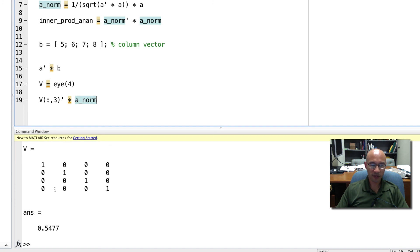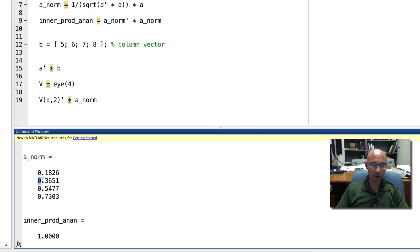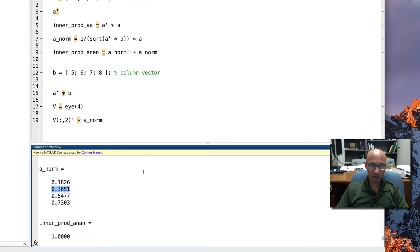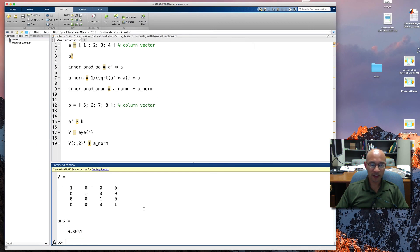And if we look back up at the A norm, sure enough, that's the third element. You could also pick out the second element. Let's run that again, .3651. Scrolling back up, A norm, second element, .3651. So that's just a demonstration of some of the concepts I showed you earlier, but implemented in MATLAB.